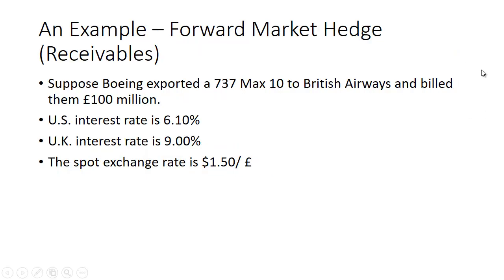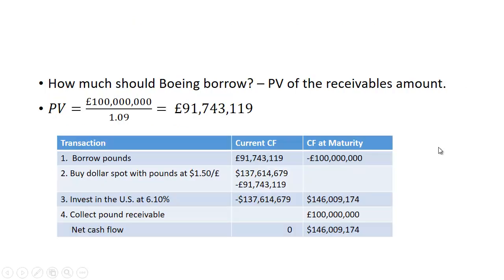Let's take a look at a receivables example. Suppose Boeing exported the 737 Max 10 to British Airways and billed them 100 million pounds. The US interest rate is 6.1%, the UK interest rate is 9%, and the spot exchange rate is $1.50 per pound.